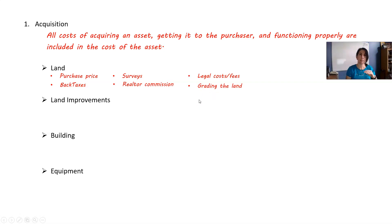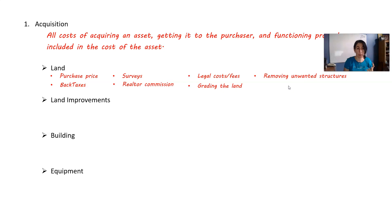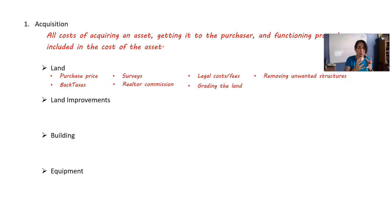Grading the land means making it the way you want it. If the land has a hill and you don't want that hill, you pay somebody to come in and flatten it out — that's grading. In addition, you might have some unwanted structures; maybe an old building you don't want. The cost of removing those unwanted structures would be included in the cost of the land. So it's not just the $50,000 purchase price — it's all these other costs, maybe another $15,000 worth. You'd put the land on your books at $65,000. When you acquire these assets, it's not just the purchase price; it's all the other costs surrounding acquiring that asset.